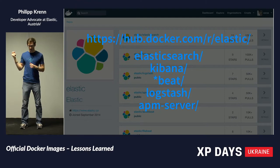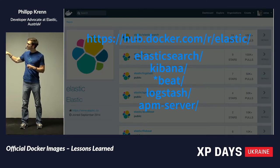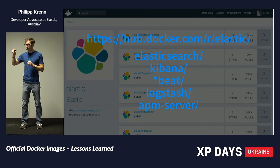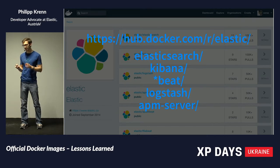The Beats and APM are only available under r/elastic, whereas Elasticsearch, Kibana, and Logstash are also available under the underscore namespace, where you can just do Docker pull Elasticsearch directly.